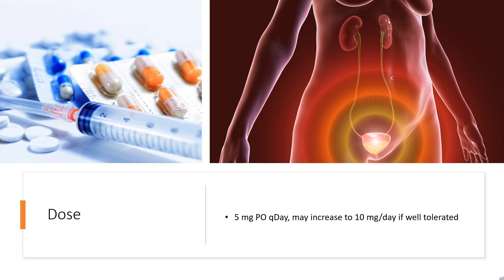Dose. Overactive bladder. Indicated for treatment of overactive bladder (OAB) with symptoms of urge urinary incontinence, urgency, and urinary frequency. 5 mg orally once daily, may increase to 10 mg per day if well tolerated.